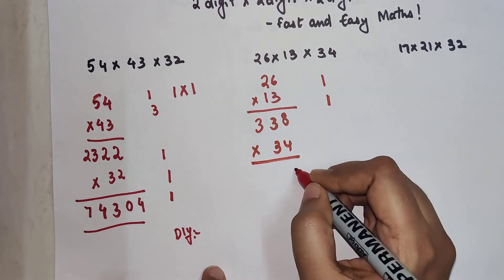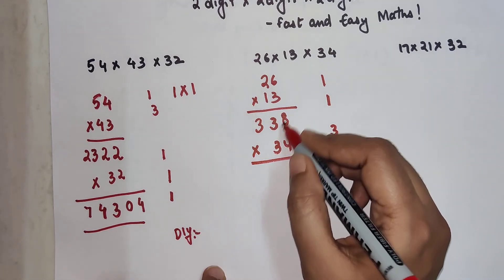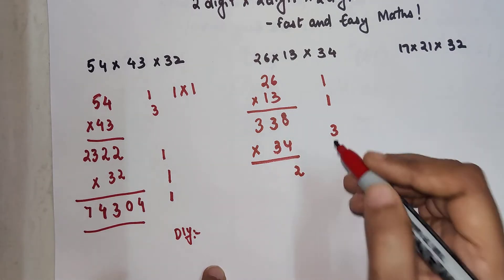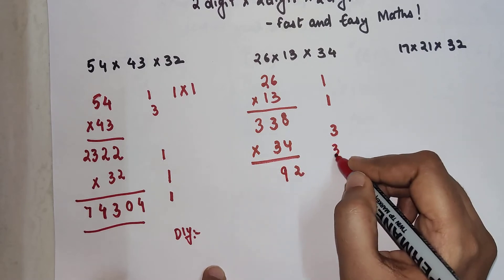So let's do this vertically. We have 3, 2, 3 carry. Then we have 12 plus 24. That gets you 36. 36 plus 3 gets you 9. And 3 carry.